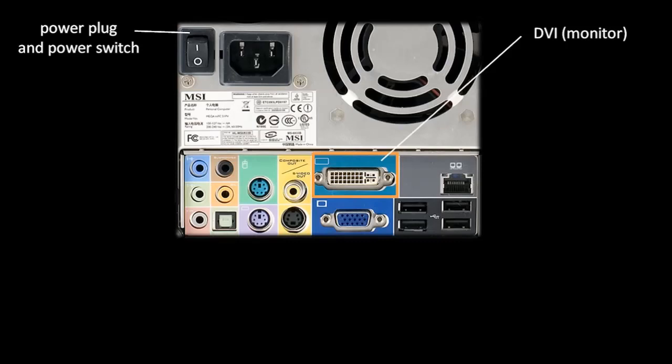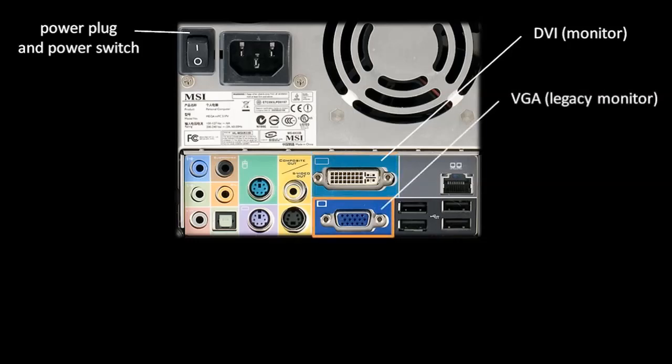There are a few different kinds of monitor connections around right now, but today the most common is this connection called DVI. So most likely this is the connector for the cord that sends the image from your computer to your monitor. This connection below is an older kind of monitor connection called VGA. VGA is still around, but being phased out, so it's an example of what we call a legacy technology.